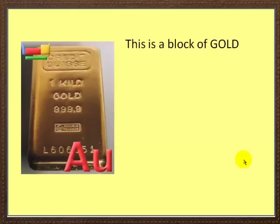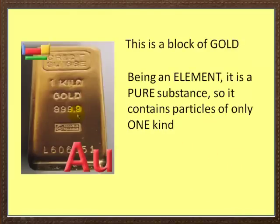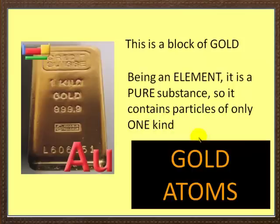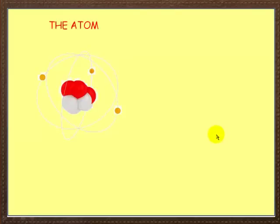Suppose you do the same thing with a block of gold. Being an element, it consists of only one type of atom. So gold is a pure substance and this only contains gold atoms. So what do these atoms look like? Well, to be honest, no one's ever seen what it looks like. But through experiments, we can make very, very good suggestions as to what the structure of an atom should be.